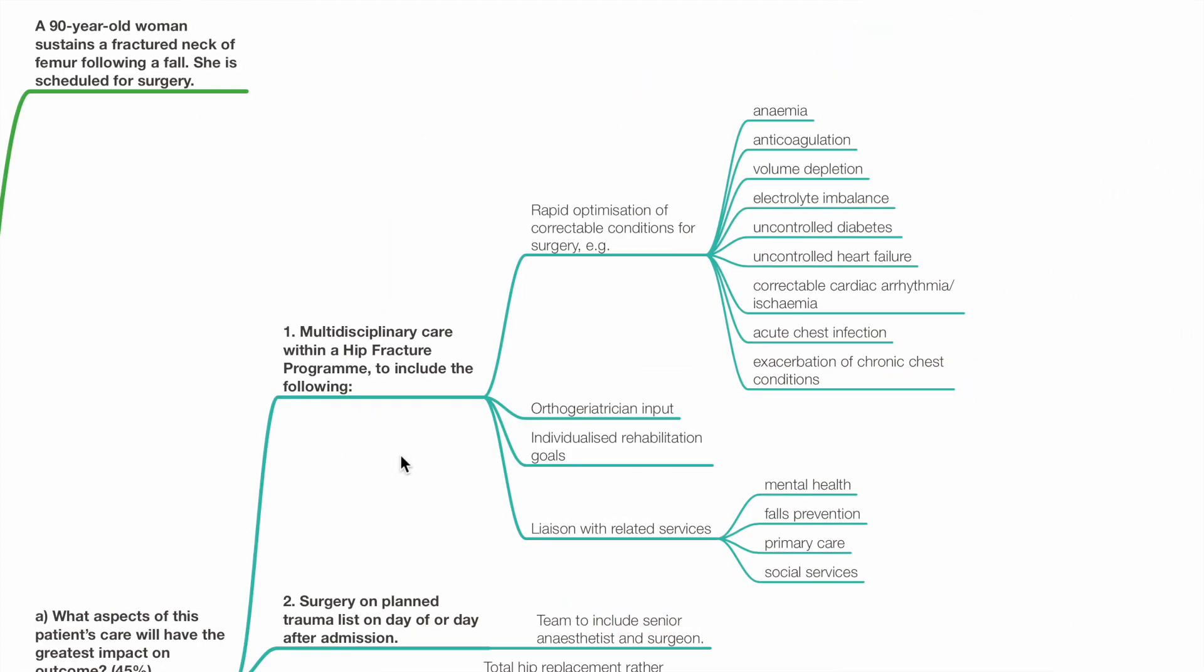Number 1, multidisciplinary care with a hip fracture program to include rapid optimization of correctable conditions for surgery, such as anemia, anticoagulation, volume depletion, electrolyte imbalance, uncontrolled diabetes, uncontrolled heart failure, correctable arrhythmias or ischemia, acute chest infection, and exacerbation of chronic chest conditions.